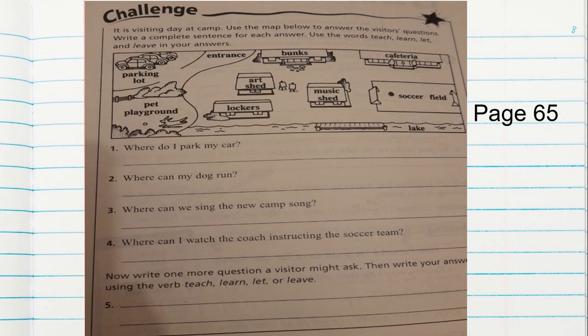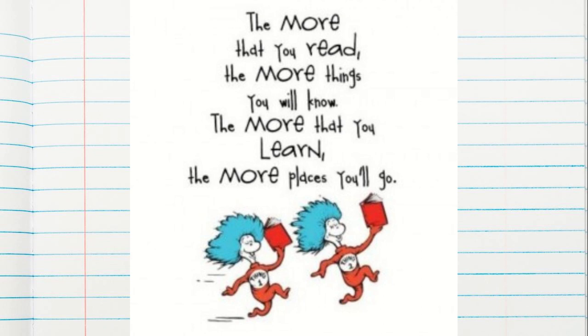You will invent your own question. For example: Where can I have a snack? Where can I play soccer? Where can my sisters learn art? Where can I find the locker or leave my things? So you will write your own sentence and send me evidence of the activity. Remember: the more that you read, the more things you will know. The more that you learn, the more places you will go. Keep reading. Goodbye, guys — I miss you!